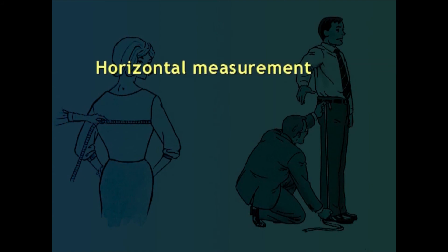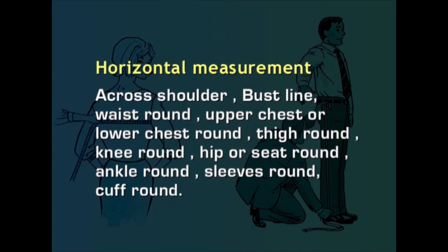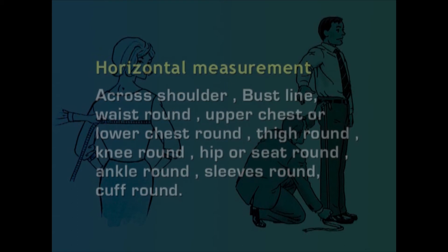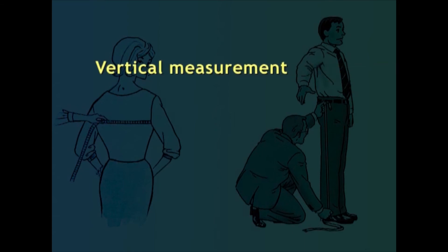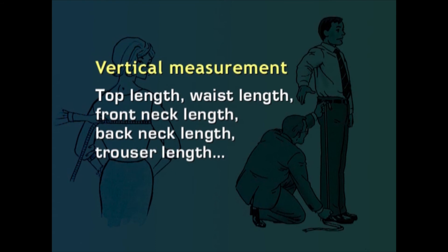Horizontal measurements are taken in width and are called horizontal measurements. Examples include: across shoulder, bust line, waist round, upper or lower chest round, thigh round, knee round, hip or seat round, ankle round, sleeve round, and cuff round. Vertical measurements are taken in length. Examples include: top length, waist length, front neck length, back neck length, trouser length, etc.